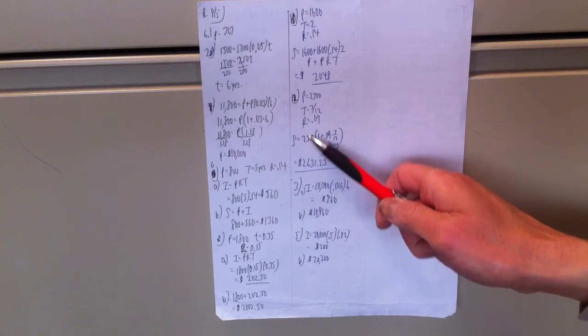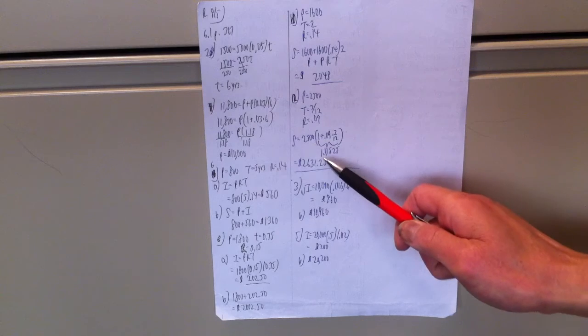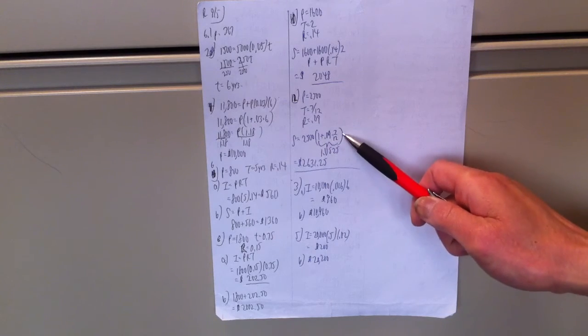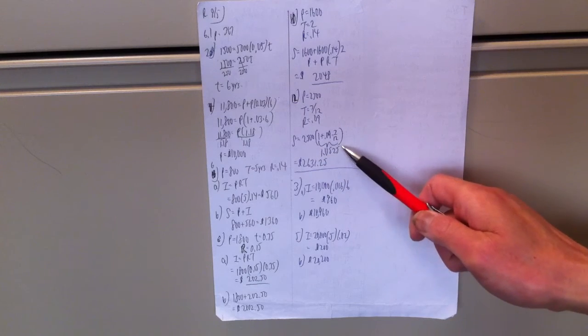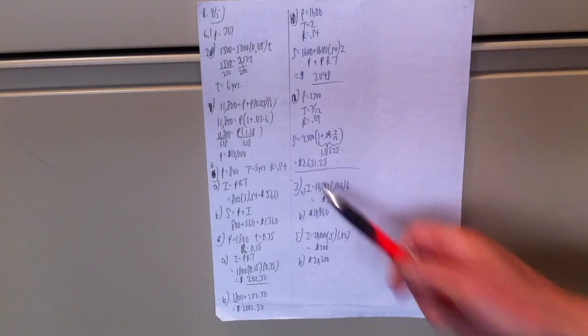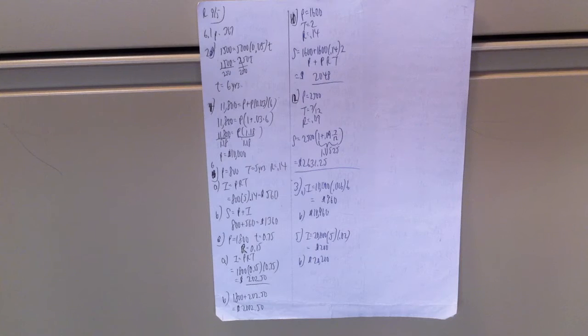I plug into the formula, 2,500 times 1 plus 0.09 times 7/12 of a year. This comes out to be 1.0525. Multiply that by 2,500. 2,631.25. Answers are always rounded to the nearest penny.